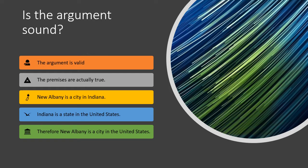An example of a sound argument: New Albany is a city in Indiana; Indiana is a state in the United States; therefore New Albany is a city in the United States. It would be very hard to say those premises aren't true. Looking at validity first — does the conclusion follow? This is a basic syllogism: A is B, B is C, therefore A is C. Both premises are true, and following the syllogism, the conclusion is also true.